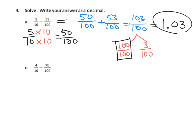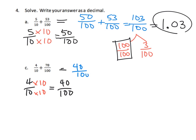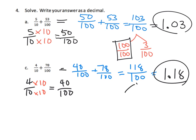Why is it 1.03? Because these are 3 hundredths — in the tenths place we have nothing, but in the hundredths place we have 3. Similarly, 4 tenths can be rewritten by multiplying both numerator and denominator by 10, giving 40 hundredths. So we end up with 40 hundredths plus 78 hundredths, which equals 118 hundredths, and we want students to see that's 1.18. They might use number bonds to take out one whole hundred hundredths, or go straight to it using mental math.